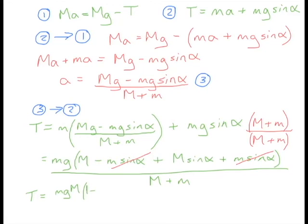One minus sin α divided by big M plus little m. And I'm afraid that's pretty much as simple as we can get that term. Before we move on to the final part of the question let's label that equation 4.